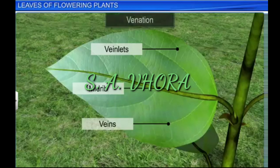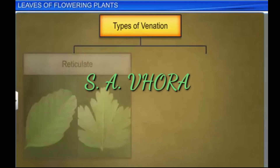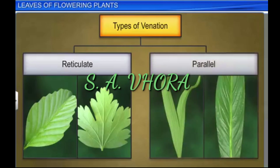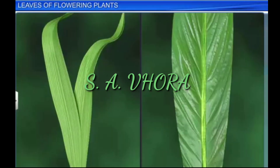Venation is the pattern of veins in the blade of a leaf. There are two types of venation: reticulate venation and parallel venation. In reticulate venation, a network or web-like arrangement is present all over the leaf blade or lamina. Examples of plants showing reticulate venation include rose, tulsi, and hibiscus.